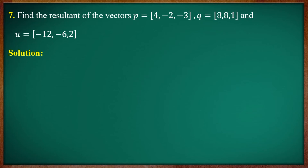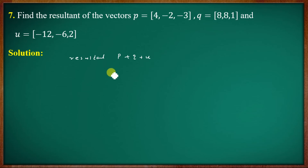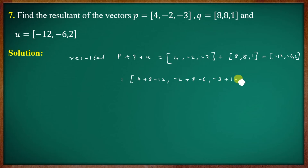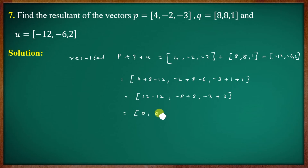Seventh question: find the resultant of vectors P = (4, -2, -3), Q = (8, 8, 1), and U = (-12, -6, 12). The resultant vector is P + Q + U. Adding components: (4+8-12), (-2+8-6), (-3+1+12) = (0, 0, 0). The resultant vector is the zero vector (0, 0, 0).